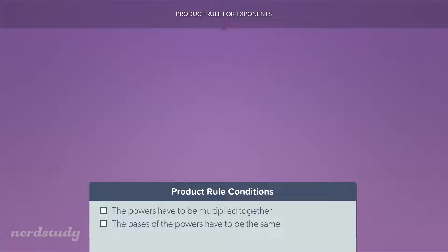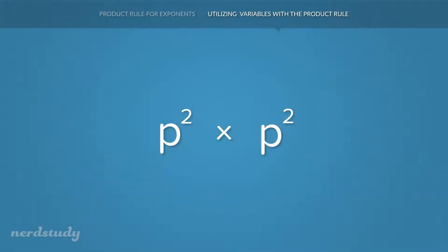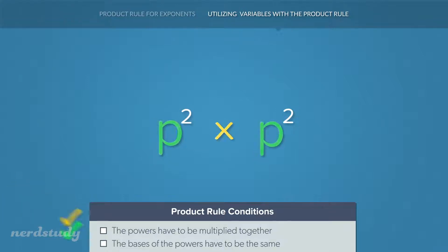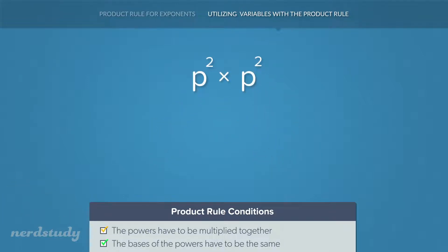What's interesting is that the product rule for exponents applies for situations where we throw variables into the powers as well. So in this situation, all we have to think about are the two conditions: condition number one is that the powers need to be multiplied together, and condition number two is that the powers need to have the same base. Both conditions are being fulfilled here, so all we have to do is add the exponents. What we get is p to the exponent 2 plus 2, which is p to the exponent 4.